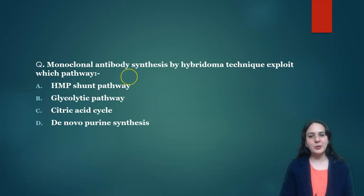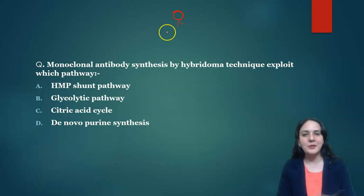Next was: monoclonal antibody synthesis by hybridoma technique exploits which pathway? Now what happens in monoclonal antibody hybridoma technique? We use myeloma cells which are rapidly dividing cells and which never die, which continue to divide like cancer cells, whereas normal cells have a lifespan and die after some time. These two cells are mixed in such a way that we get three types of cells: one are normal cells, one are hybrid of both cells - myeloma and the normal cells - and one only myeloma cells.